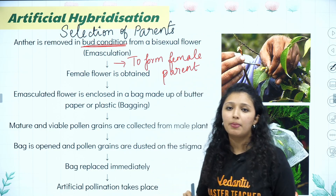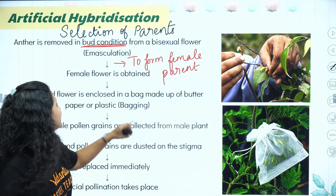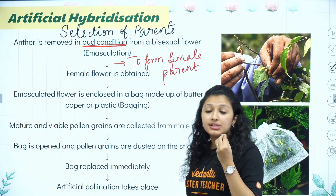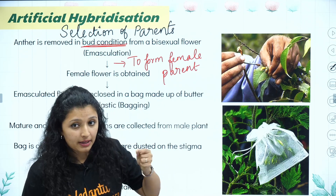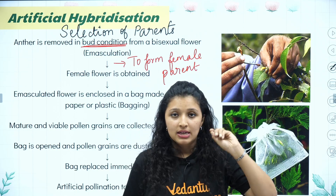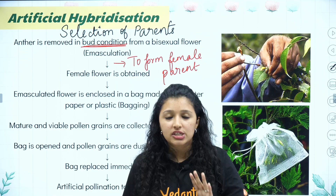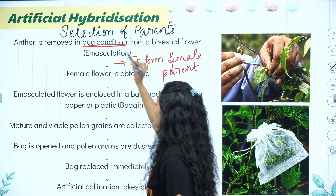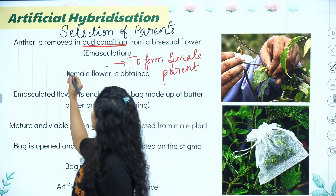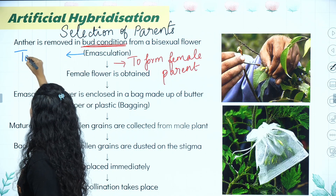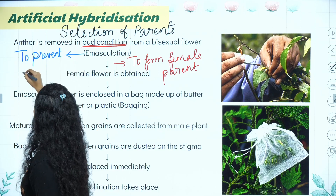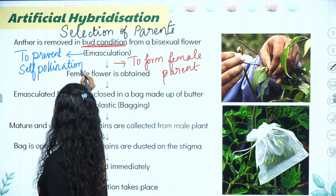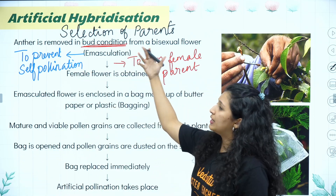Anther is removed in the bud condition from a bisexual flower to form the female parent. This process is called emasculation. Emasculation is done to prevent self-pollination, since we have another plant ready to give the desired pollen grains.